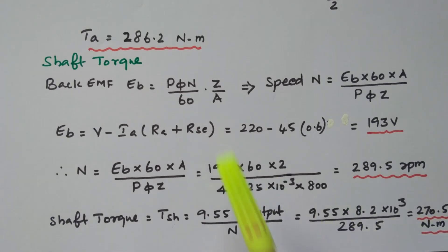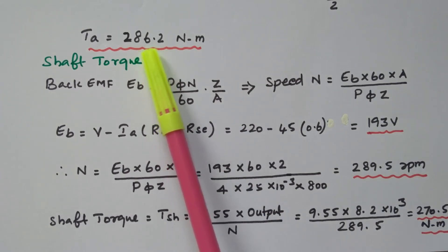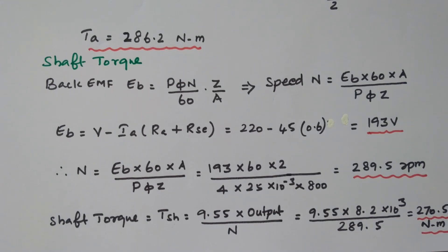The shaft torque is less than the armature torque. The armature torque of 286.2 Newton meter is developed inside the motor, but after some losses, the remaining 270.5 Newton meter is available at the shaft. So in this problem, we calculated the armature torque as well as the shaft torque.